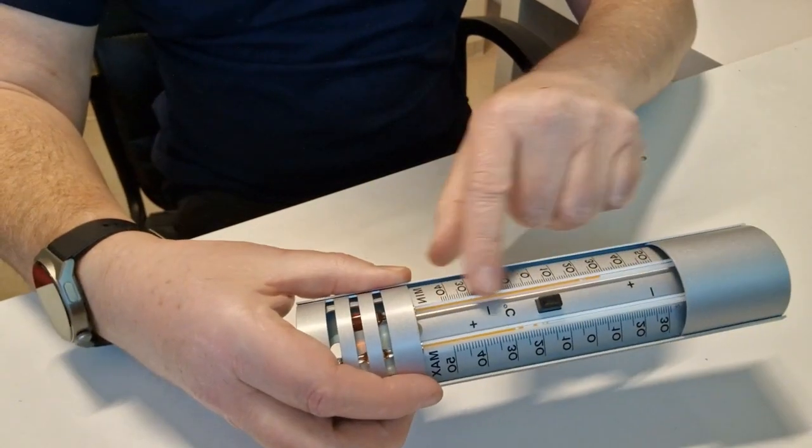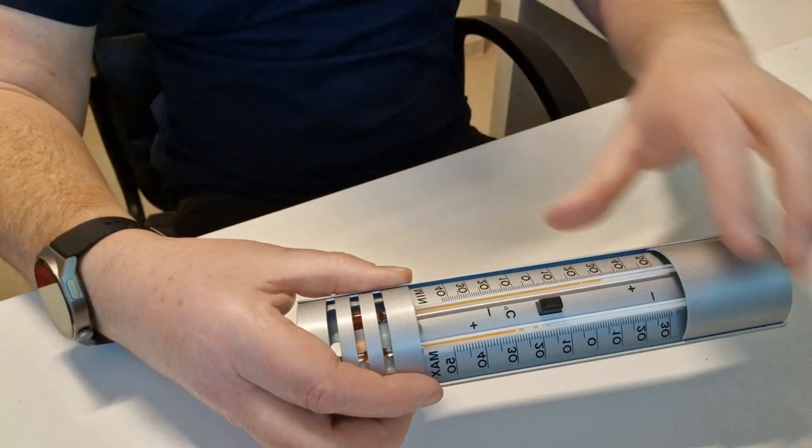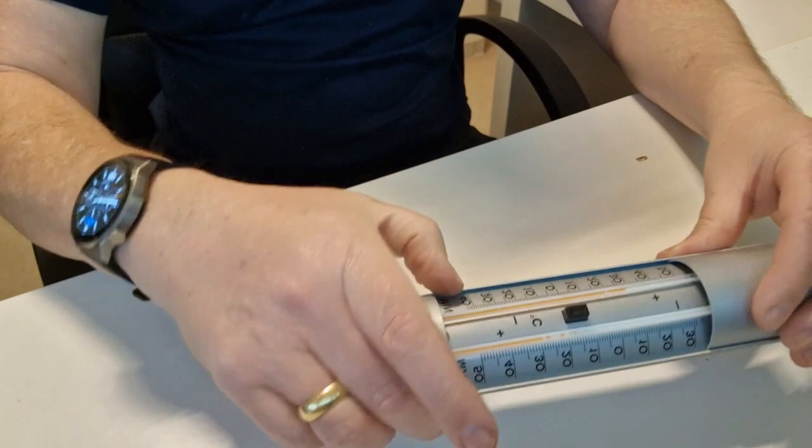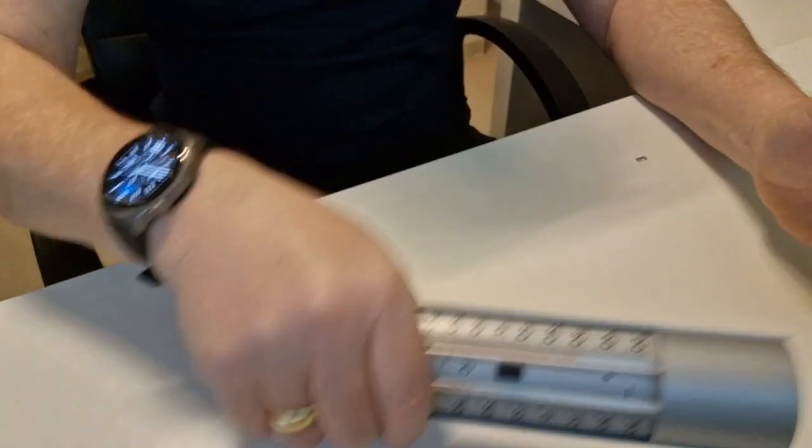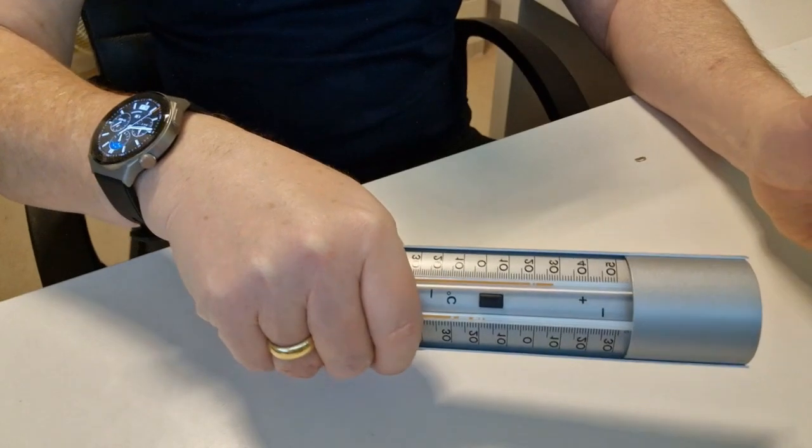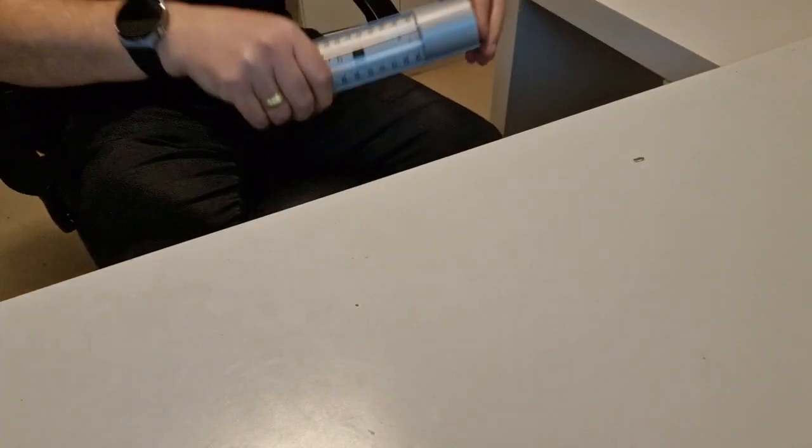Then what we're going to do to get this liquid to connect together is we're going to hold the top end where the min-max is written and we're going to use a flicking action and what that will do is it will force the liquid back together. So I'll just lean back a bit.